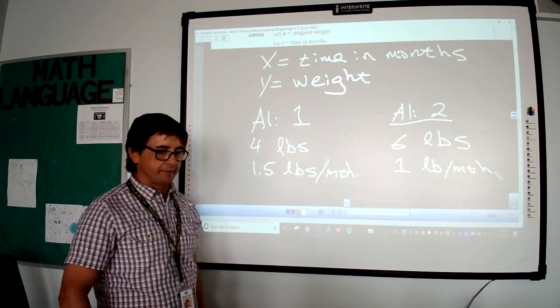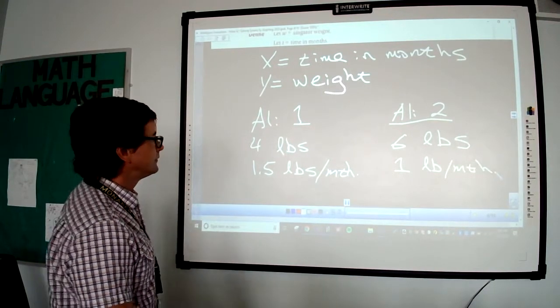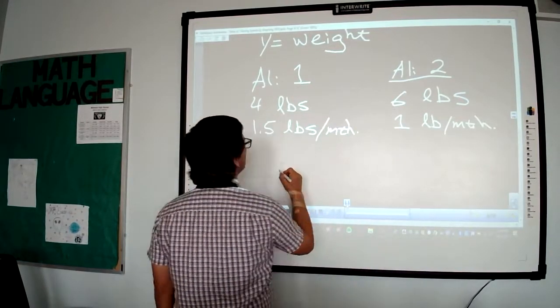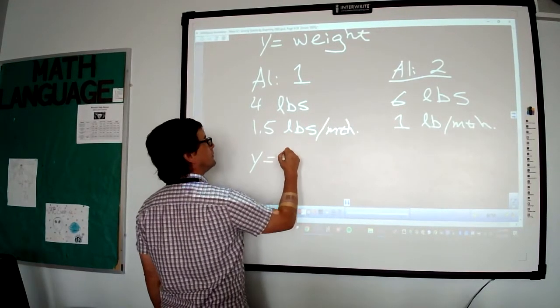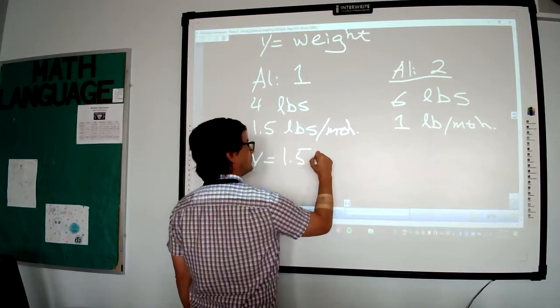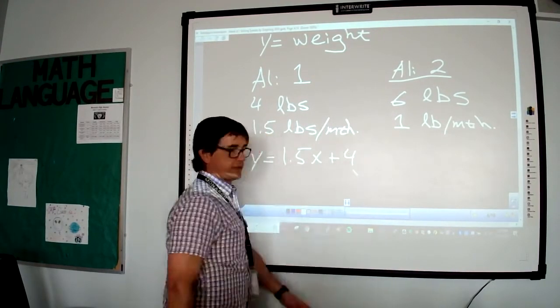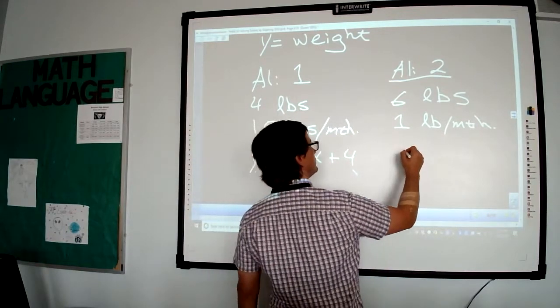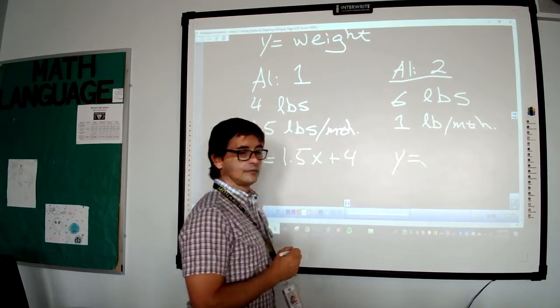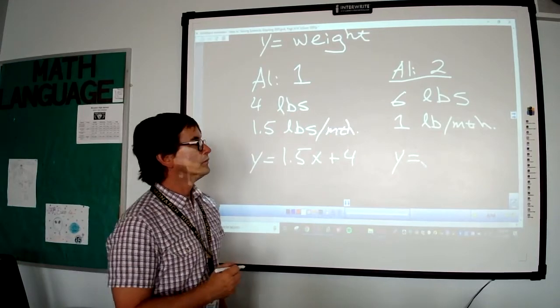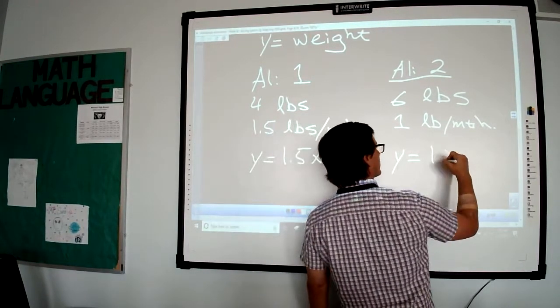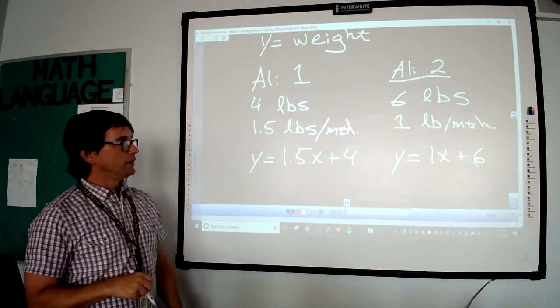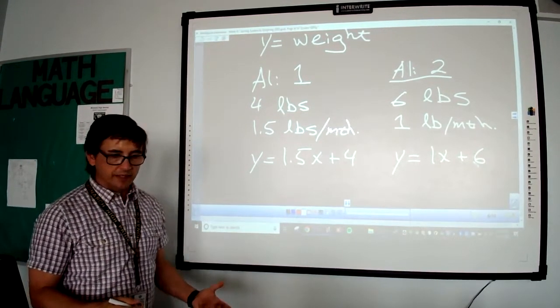I want somebody to be brave and tell me how to write this first equation. You can raise your hand and I'll unmute your mic. It would be Y equals 1.5 X plus 4. You want to do the other one? Sure. It's Y equals 1 X plus 6. So you got the two equations. No big deal.